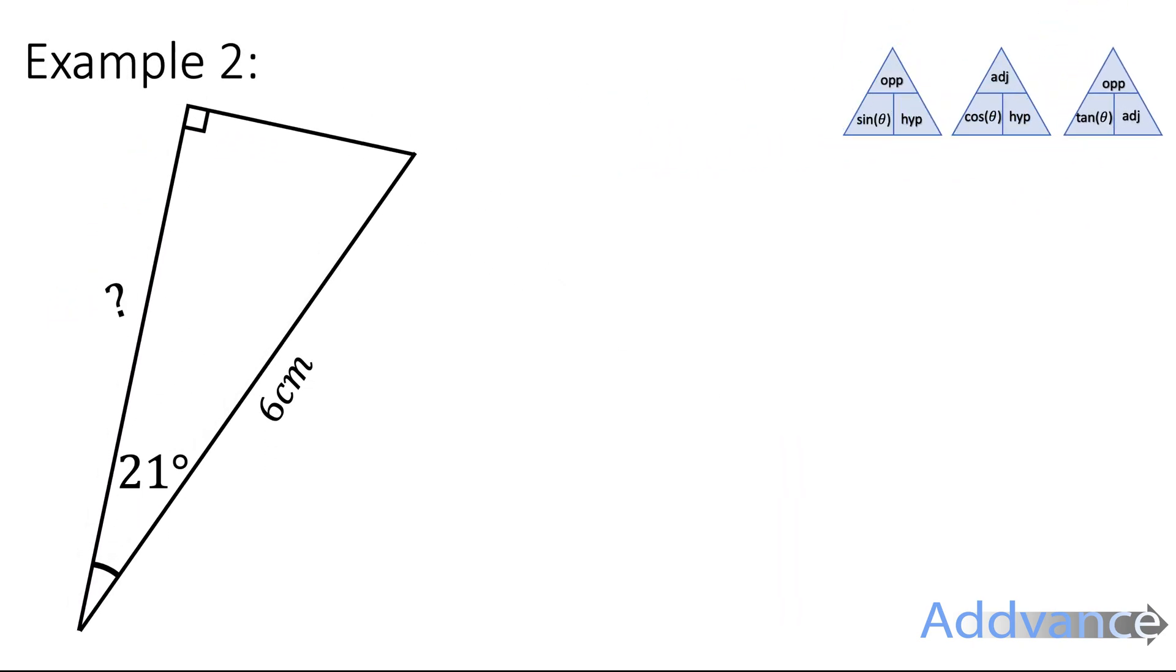Example two, we've got 21, 6, and a missing angle, and we label these as the adjacent and the hyp. We want to find the adjacent and we're given the hyp. So which triangle uses adj and hyp? That is the cos.